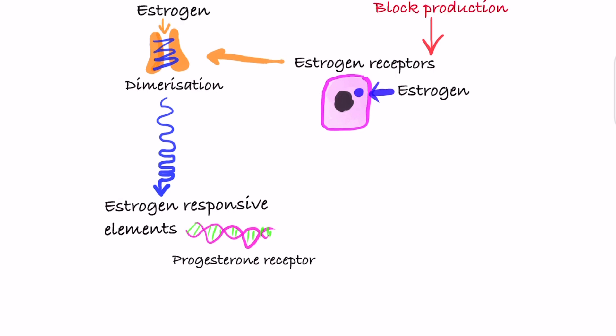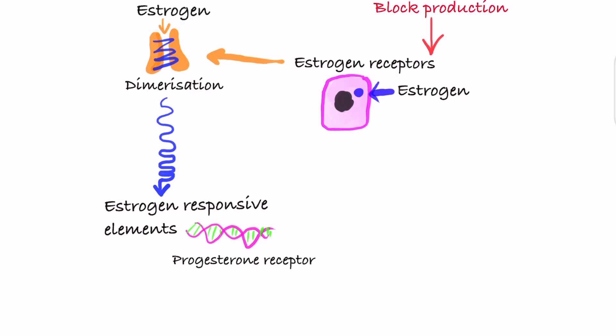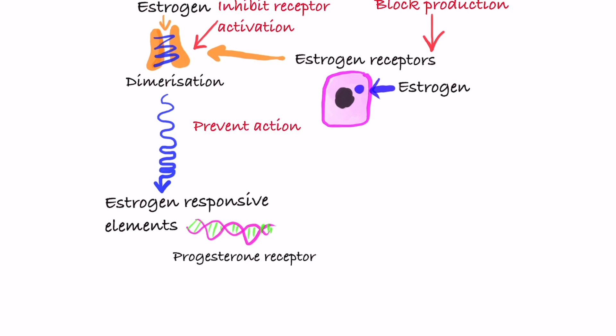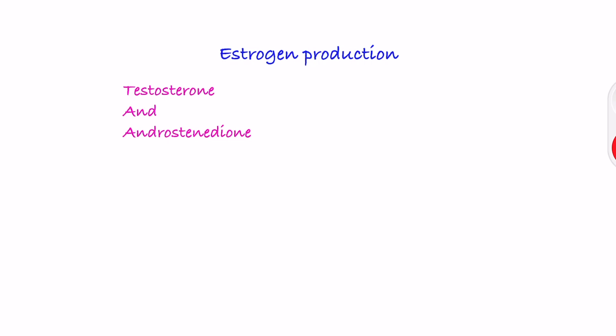As part of treatment, the action of estrogen on breast cancer cells needs to be stopped. One way is to block the production of estrogen. A second way is to inhibit receptor activation by inhibiting the crucial step called dimerization. A third way is to inhibit the agonist action of the estrogen receptor on genes.